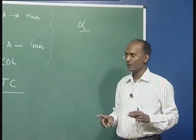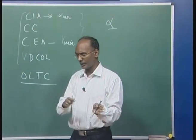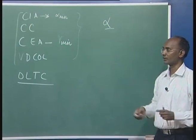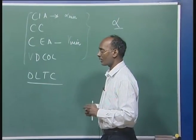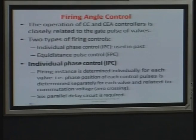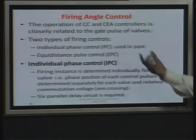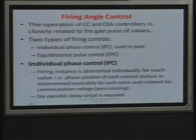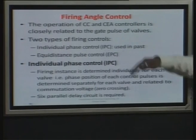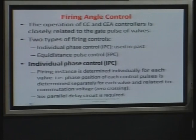In the literature, there is firing angle control. The firing angle — whether it is a rectifier or inverter — we have to have this alpha. If alpha is less than 90 degrees, then it is rectifier mode; more than that, it is inverter. There are two schemes popularly used: individual phase control (IPC), which was used in the early days with mercury arc valves, and equidistant pulse control (EPC), which most modern HVDC control stations use. We will discuss both the IPC and EPC differences, advantages, and disadvantages.